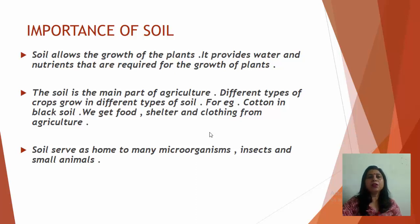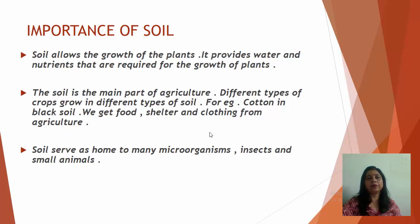Soil is the main part of agriculture. Different types of crops grow in different types of soil — for example, cotton grows in black soil. We get food, shelter, and clothing from agriculture.